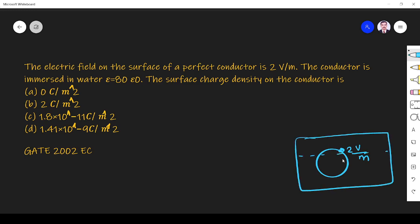We immersed this inside water where epsilon is equal to 80 epsilon naught. What is the surface charge density on the conductor?